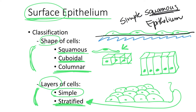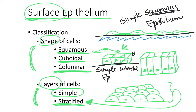If we have a single layer of cuboidal cells where the basal surface of this single layer is touching the basement membrane, this epithelium is named simple cuboidal epithelium. Then, if we have a single layer of tall cells, this epithelium would be named simple columnar epithelium.